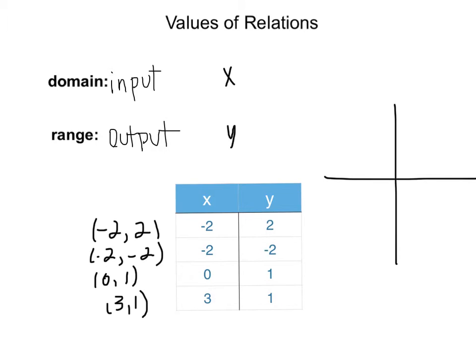So negative 2, 2; negative 2, negative 2; 0, 1; and 3, 1. As we can see, a relation can be represented as both a table and a graph.